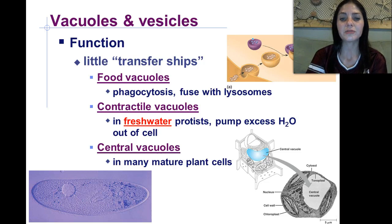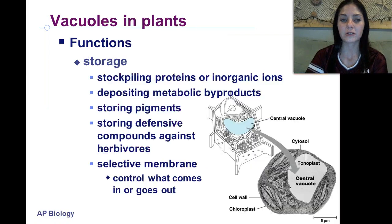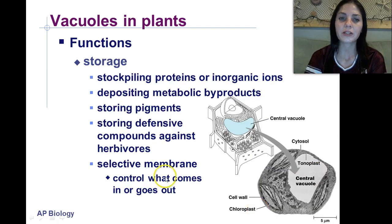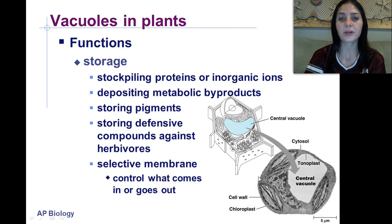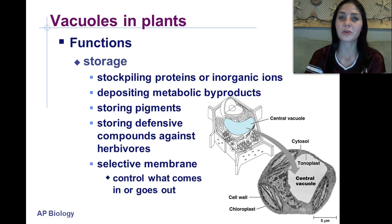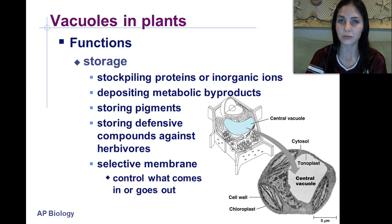We have central vacuoles that occur in many mature plant cells. Functions of vacuoles in plants include storage — they stockpile proteins and inorganic ions, deposit metabolic byproducts, store pigments, and store defensive compounds against herbivores.